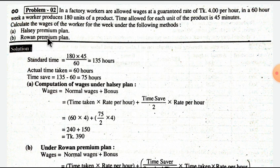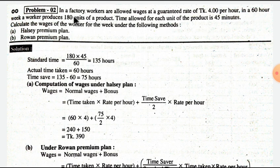Before calculating, note the standard time barrier. The standard output is 188 units of product. If the actual output is 156 units, they will have 64 units. One unit standard time variable for the actual units produced.